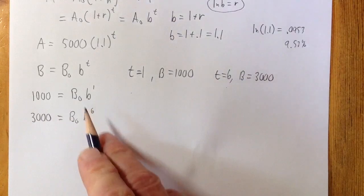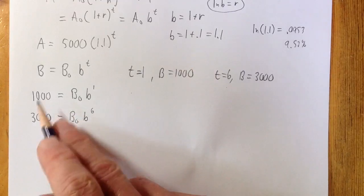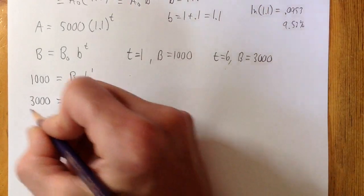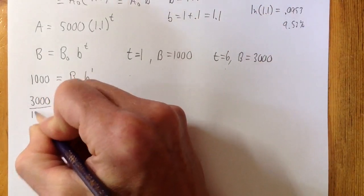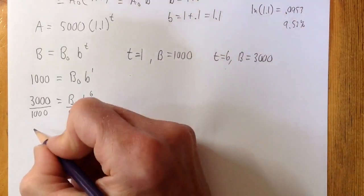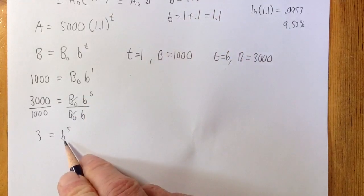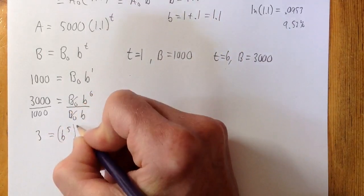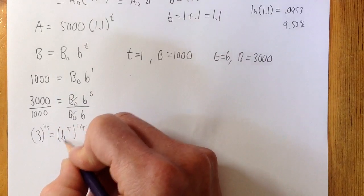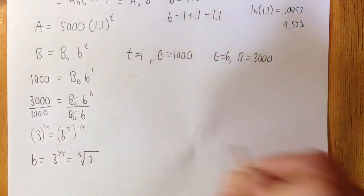The easiest way to solve these is to divide them, which eliminates B₀ right away. Dividing 3,000 by 1,000 on the left and B₀b⁶ by B₀b on the right: 3 = b⁵. The B₀'s cancel and b⁶ divided by b is b⁵. To solve for b, raise both sides to the 1/5 power: b equals 3 to the 1/5, which is the 5th root of 3. That's how the answer key writes it.